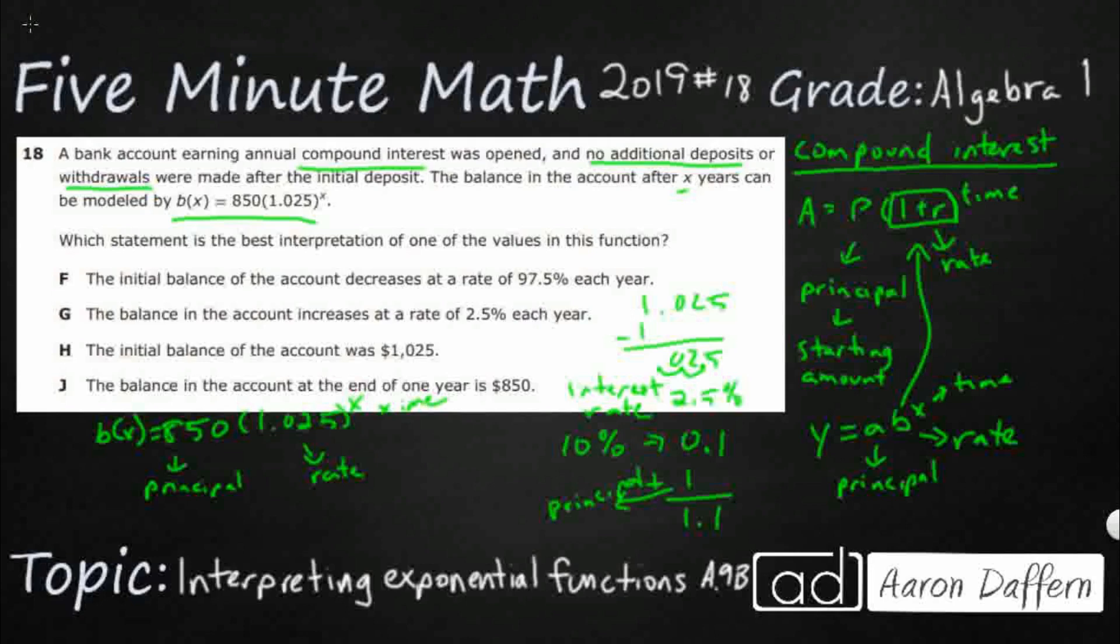So let's see which statement best represents this. The initial balance of the amount decreases. Now we're increasing because it's greater than 1. It decreases if it is less than 1. In this case, it's going to increase. The balance increases at a rate of 2.5. That's what we just said. The initial balance, nope, was 850. And the balance at the end of the year, nope, that's at the beginning. So our answer here is G.